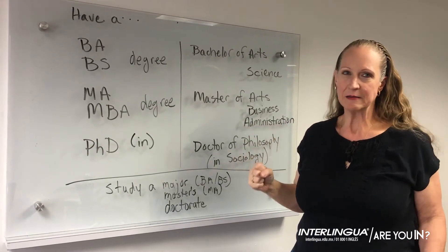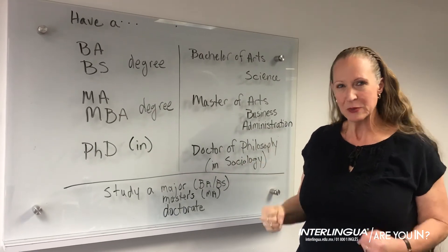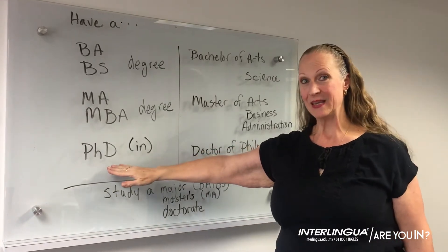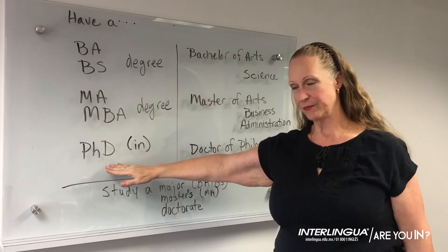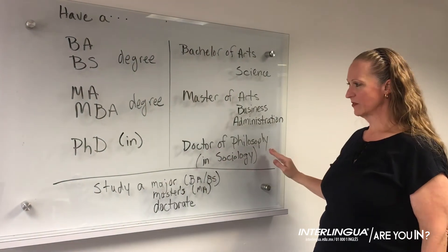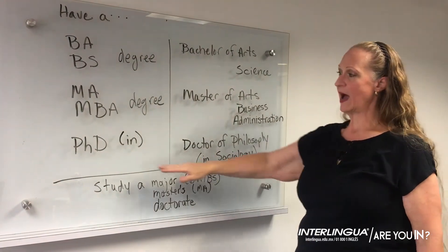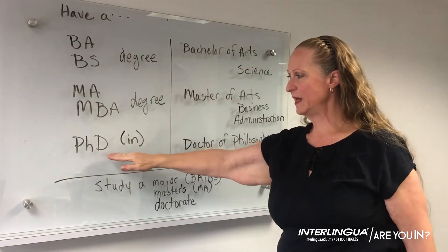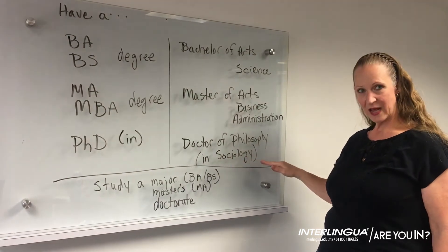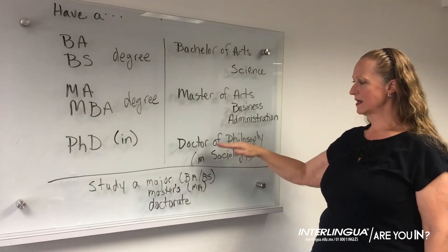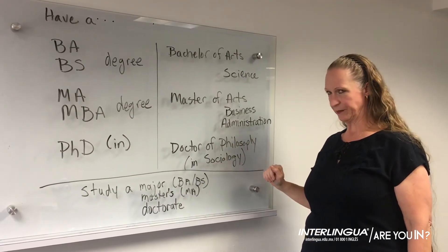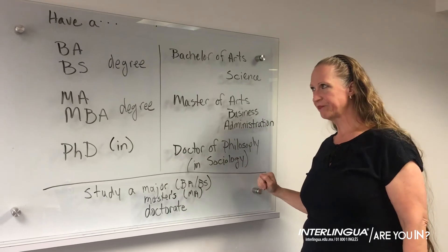Let's say you like to really study — you can go on and you can get a PhD. PhD is a Doctor of Philosophy, and we usually say he has a PhD in, for example, sociology. He's a Doctor of Philosophy in sociology.